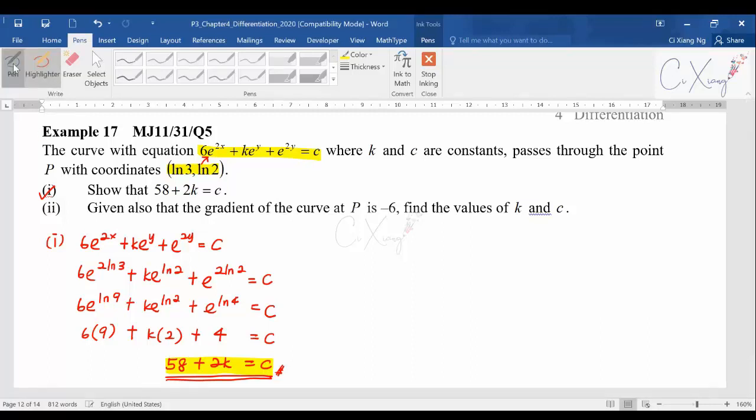Then we continue to part (ii). Given also that the gradient of the curve - when they talk about gradient means dy/dx - and the value for dy/dx is equal to -6. They want you to find k and c. Since they give the information dy/dx = -6, to solve this question you need to get dy/dx first. How to get dy/dx? Looking at the original equation, you need to do implicit differentiation.